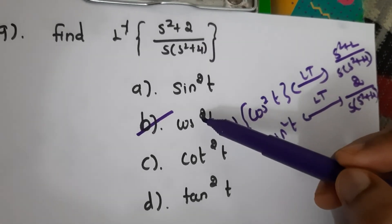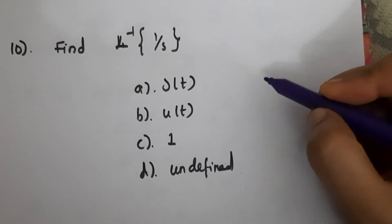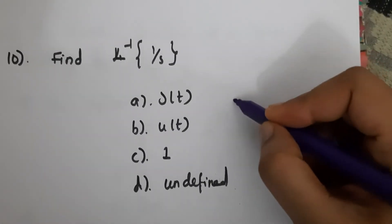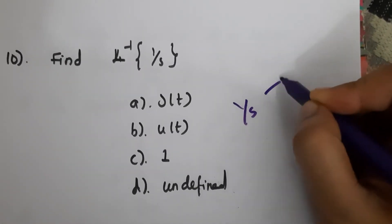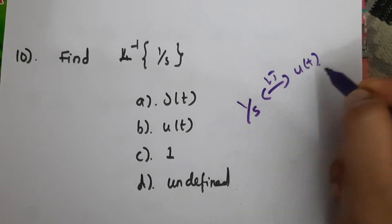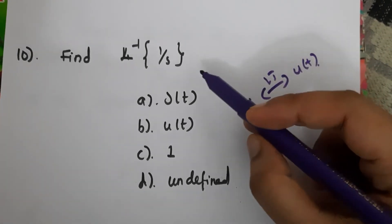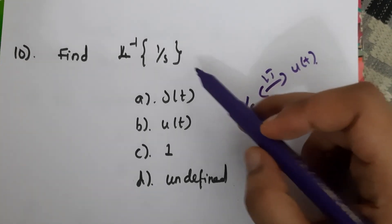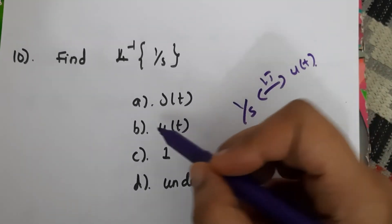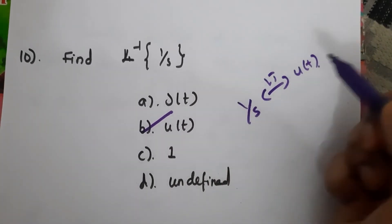Final question: find the inverse Laplace transform of 1/s. This is a standard result — the Laplace transform pair for the unit step signal u(t) is 1/s. So the inverse Laplace of 1/s is u(t). The answer is B.